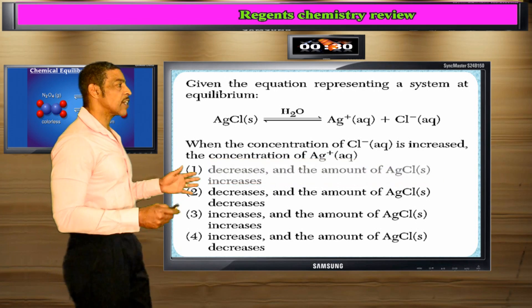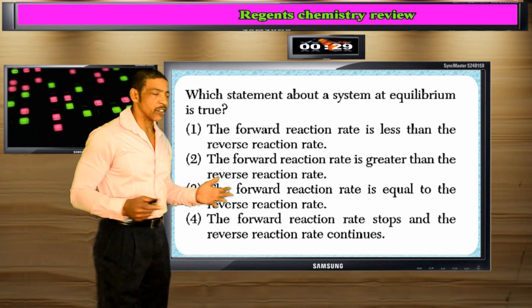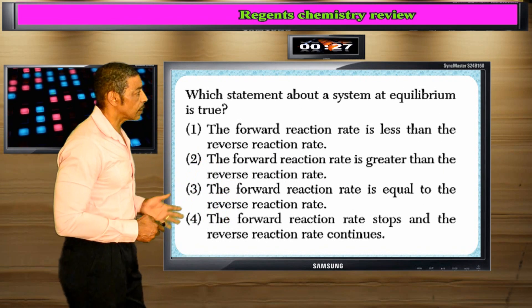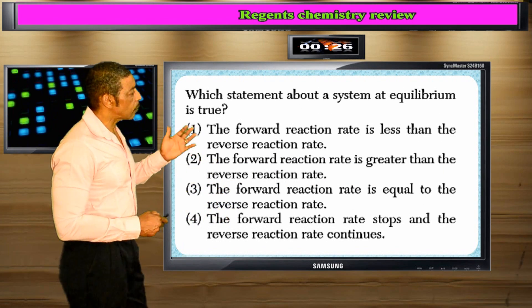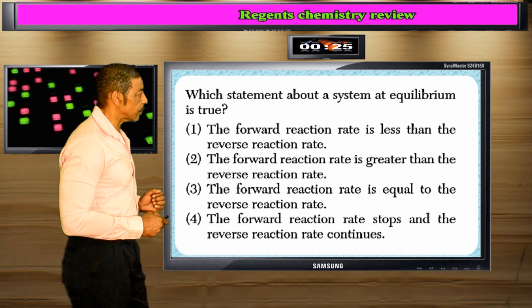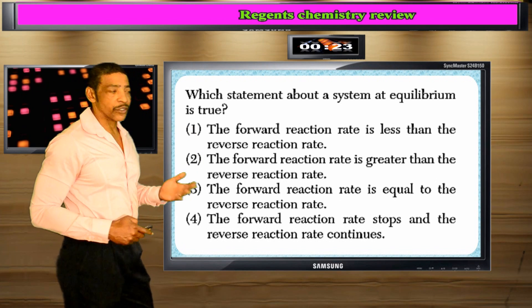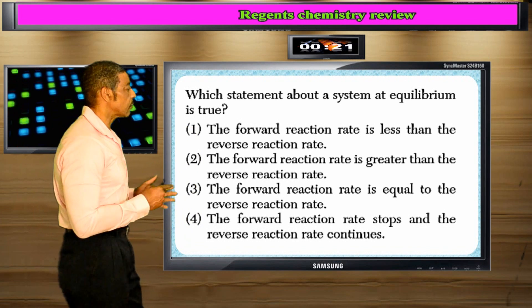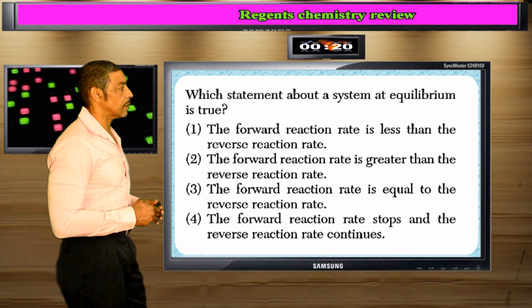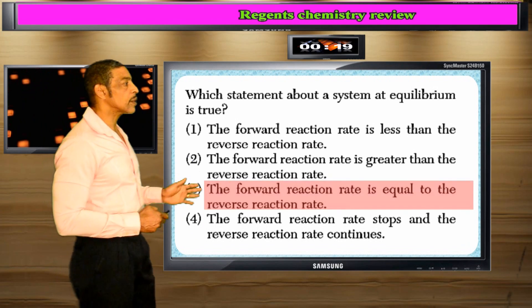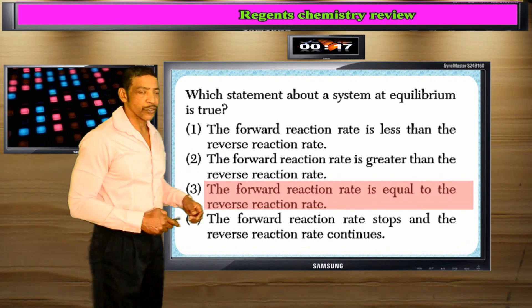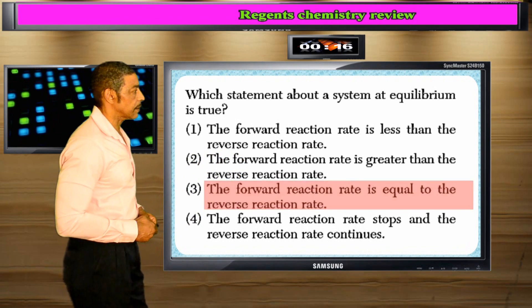Which statement is true about a system at equilibrium? At equilibrium the forward and reverse reaction rates are equal and the concentrations are constant. So the correct answer to this question is that the forward reaction rate is equal to the reverse reaction rate.